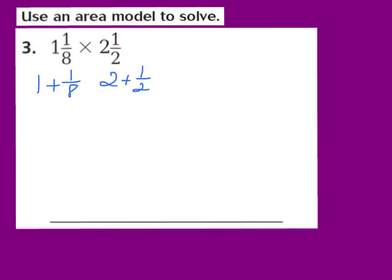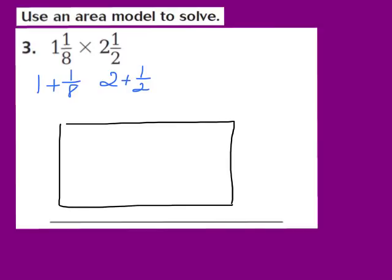Once we have those rewritten, step number 2 is to draw an area model and label each section to show how we broke apart the mixed numbers. So we're going to draw a rectangle. I'm going to draw a line here, and let this top side represent our 2 and 1/2, writing down the 2 here plus the fraction 1/2. Then I'll draw another dotted line, and let this side represent our 1 and 1/8, writing down 1 plus the fraction 1/8.